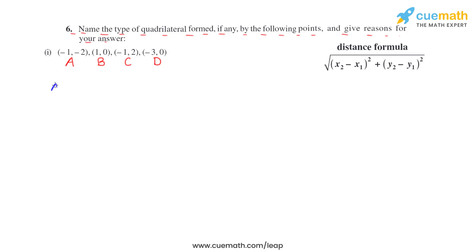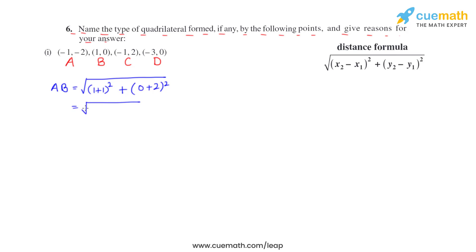First, let's find AB. Applying the formula: (1 minus −1) whole square plus (0 minus −2) whole square, which becomes (1+1)² + (0+2)² = 4 + 4 = 8. So AB = square root of 8 = 2√2 units.